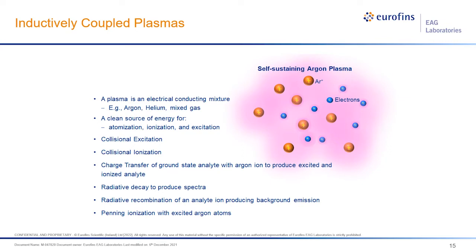Argon plasma is described in literature as an electrically conducting mixture containing a significant concentration of cations and anions, with net charge approaching zero. Argon ions, once formed in the plasma, are capable of absorbing sufficient power from an external source to maintain temperatures at which further ionization sustains the plasma. Effective introduction of sample analyte into the high temperature zone, relatively long residence times, and higher attainable temperatures are critical to plasma emission spectroscopic measurements. Plasmas are also considered clean when compared to combustion flames.